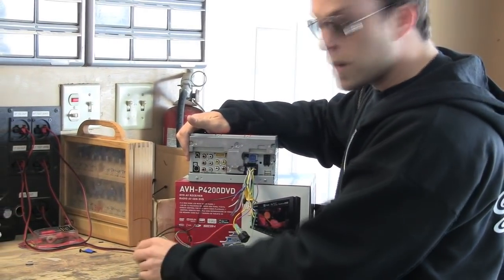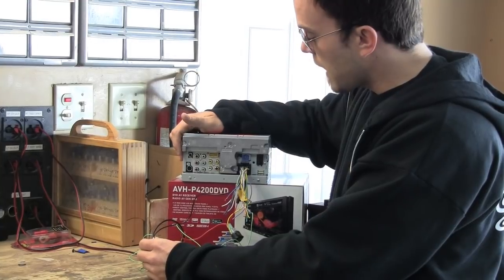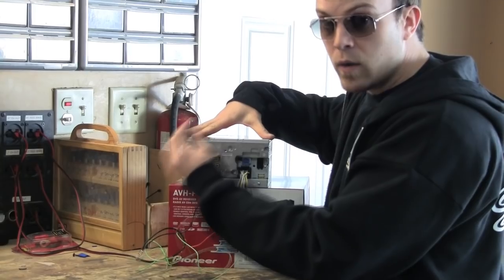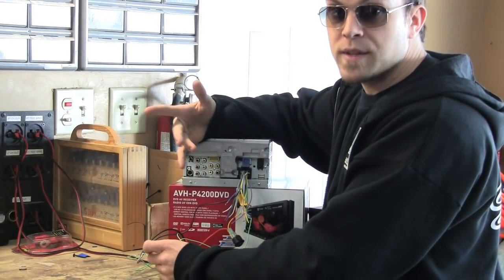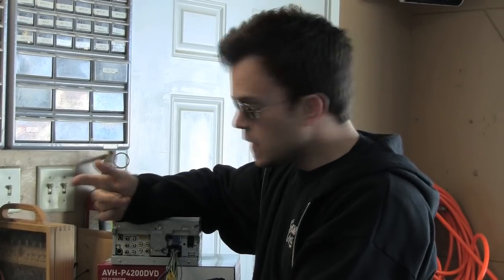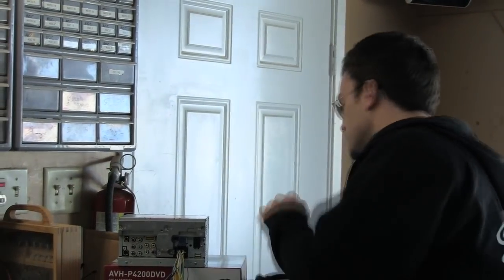Now, you can't just permanently ground this, because what's going to happen is if the unit turns on when this is grounded, it's going to give you that same error message. We need to ground this after the unit's on. Some people can use a toggle switch that you have to turn on every time you turn your key on. You turn the key on, then you flip the switch. But we're going to show you how to bypass it without a toggle switch.